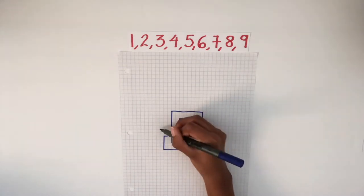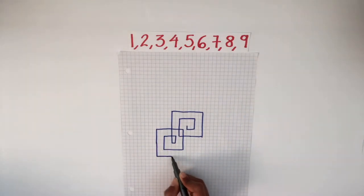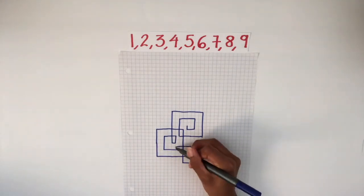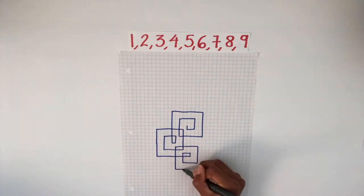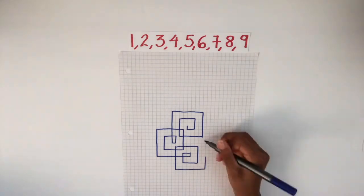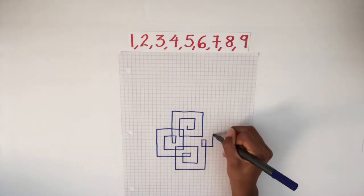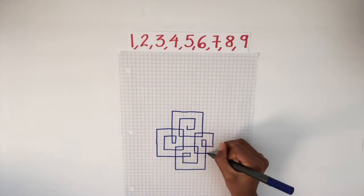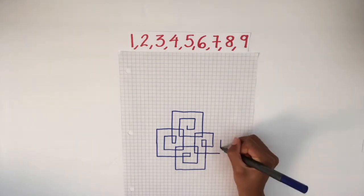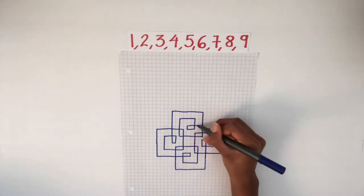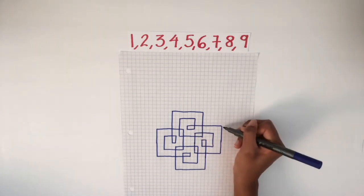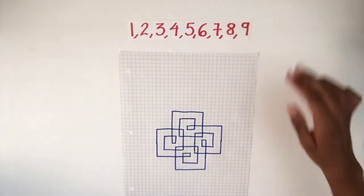Once you have reached 9, repeat the pattern again, making sure to turn right every time you finish drawing the segment. You can also change your marker color or even experiment with other types of paper. Once you are finished, it should look something like this.